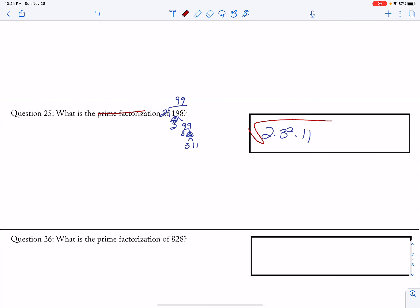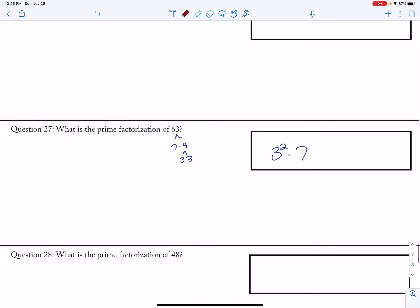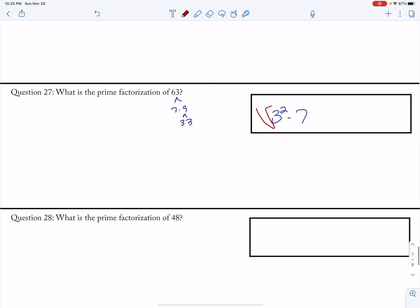So this would be root 3 squared root 2 times 11. So this is 3 root 22. And square root would make this a 3 root 7.